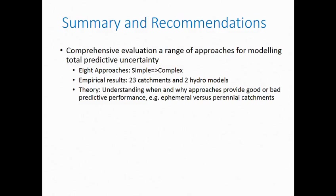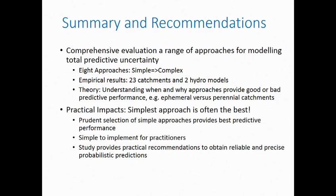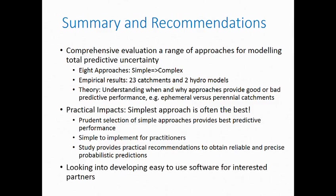In summary, we've performed a comprehensive evaluation of a range of approaches for modelling total predictive uncertainty, ranging from simple to complex, across 23 catchments and two hydrological models, using mathematical theory to understand when and why approaches provide good or bad predictive performance. The simplest approach is often the best — prudent selection of error models can produce the best predictive performance. This is simple to implement for practitioners, and our study provides practical recommendations to obtain reliable and precise probabilistic predictions. We're also developing easy-to-use software for providing these predictions — if there are any interested partners, please come and chat to me afterwards.